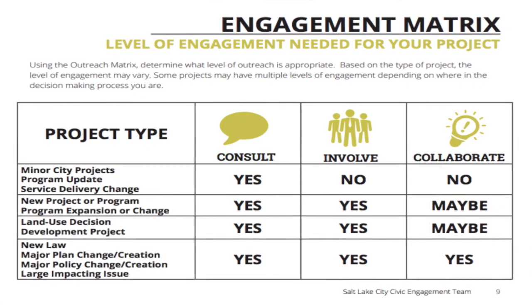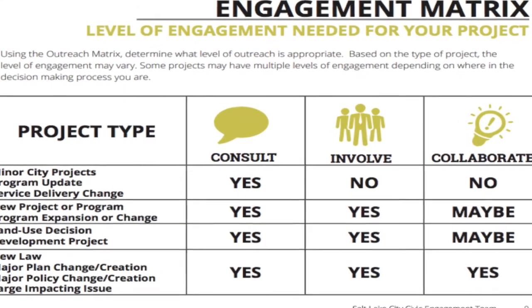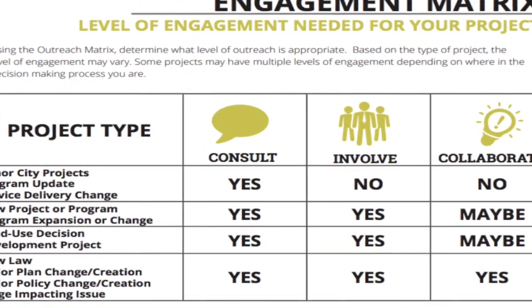Then assess the probable level of controversy — try to figure out in advance if the issue needs negotiation, a collaborative process, or consensus building. Then define public participation objectives. What are you really trying to accomplish? Is it informing the public? Is it consulting on the project? Use the International Association of Public Participation levels of community engagement to decide what level of public participation is appropriate.